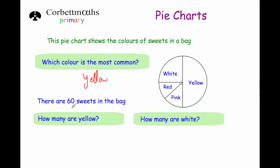The next question says there are 60 sweets in the bag. How many are yellow? Now the yellow section takes up half of the pie chart. That means that half of the sweets are yellow. So if we just do 60 divided by 2 we'll get the answer and that's 30. So 30 sweets are yellow.